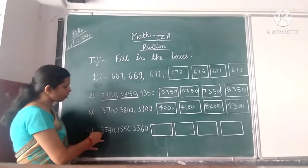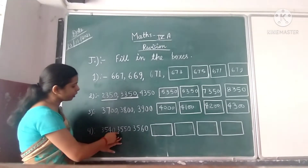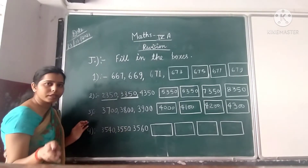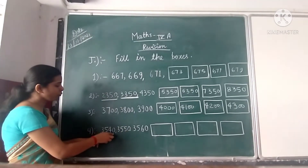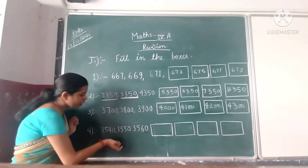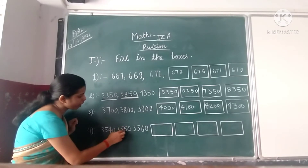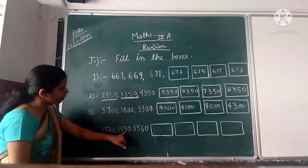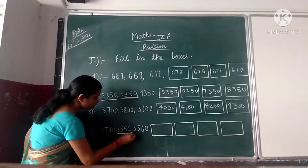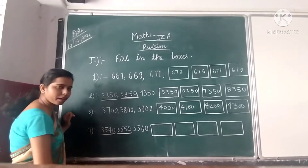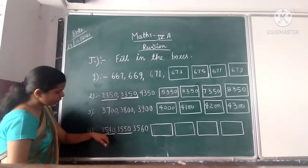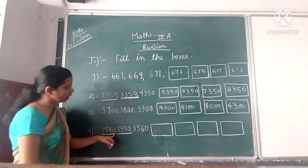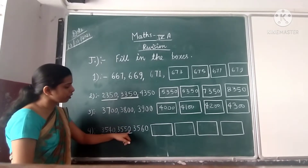Next question: 3540 and 3550. 3550 is always greater than 3540. Why? In the 10's place, there is 5 and here is 4, so 5 is always greater than 4. That's why this number is always greater than this number. So when we add 10 in 3540 we get our next number 3550.